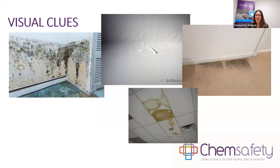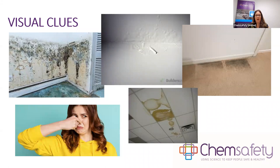Next is water staining on ceiling tiles, which can be an indicator of a roof leak or a leak in piping in the ceiling space. Whilst these stains can be quite common and easily formed on this type of tile, it is a visual clue and does need investigation. And of course there is the smell — mould can smell musty, and once you have been in a few places with a mould problem you get to know that smell pretty well.